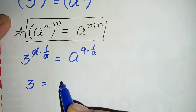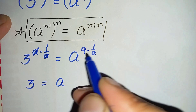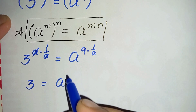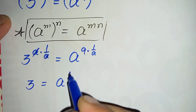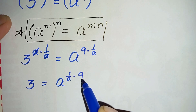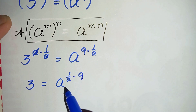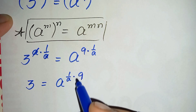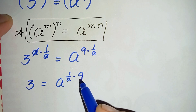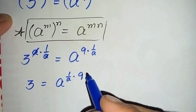So 3 is equal to a raised to the power — we can rearrange the powers and write them as 1 over a times 9. Now next we will try to eliminate this 9 from the power on the right hand side, so for that we will take 1 over 9 as the power on both sides.